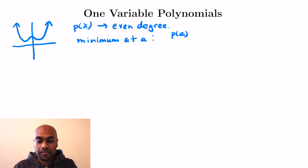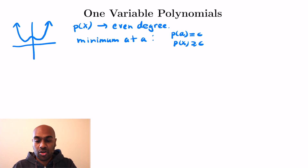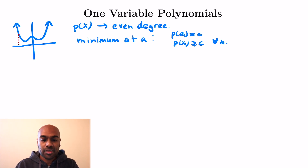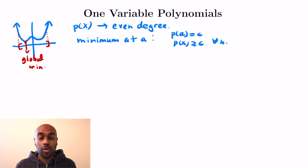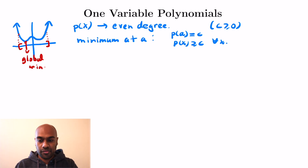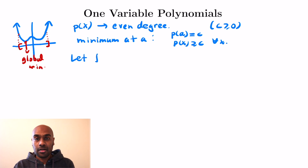Since it has even degree, it's going to go off to infinity as x goes to both positive and negative infinity, and I claim that this function is forced to have a minimum — a minimum at some value a, and let's call that minimum c. So the polynomial is greater than or equal to c no matter what, and at a it equals c. Since it has even degree and goes off to infinity, we can cut it off at certain values, look at a finite interval, and by calculus that interval has a minimum which is a global minimum. That minimum c is greater than or equal to zero because the polynomial is non-negative.